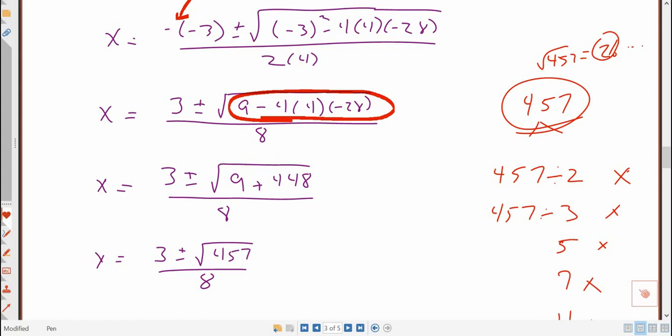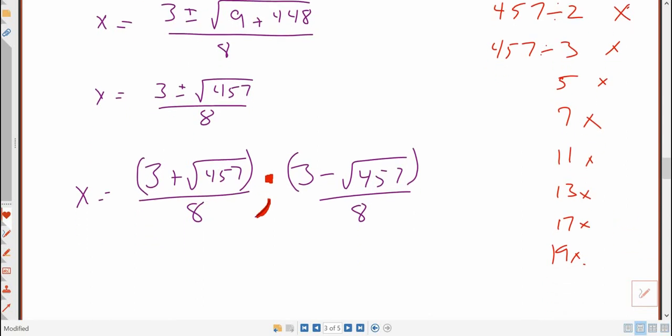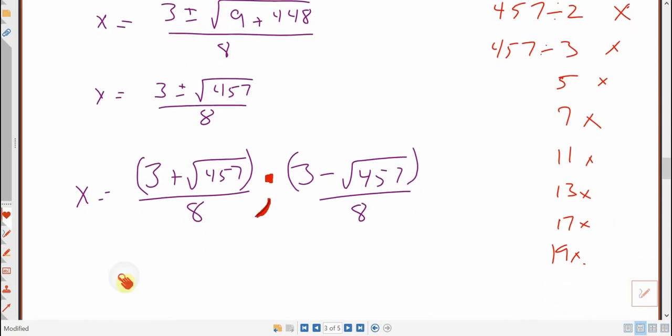The other thing is when you're typing things into the calculator, if you were to type in this final answer and you wanted a decimal for it for some reason, you need to have this entire numerator in parentheses. Or even if you're just typing that into Mobius, you want that in parentheses. So to type this into Mobius, you would have parentheses 3 plus square root parentheses 457, close parentheses, divided by 8. And then semicolon 3 minus square root,